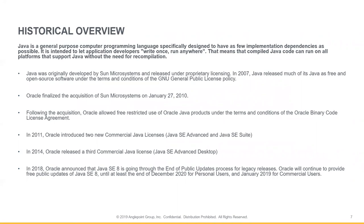In 2010, Oracle acquired Sun Microsystems. Following the acquisition, Oracle maintained Java as a free product under the terms and conditions of the Oracle Binary Code License Agreement. This is the version of Java that most people think of — it's free of use under an Oracle Restricted Use Agreement.